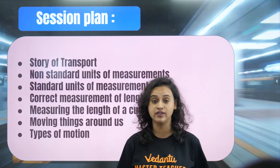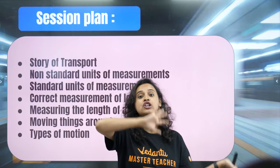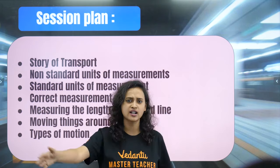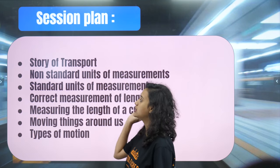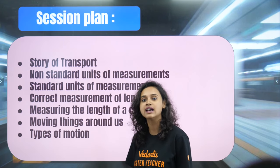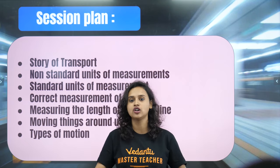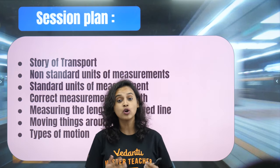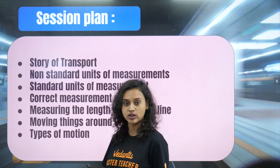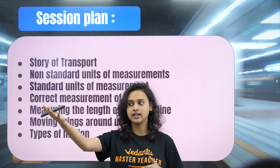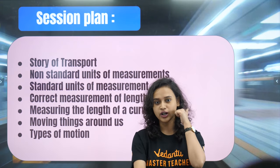In today's session we're going to talk about the story of transport — how the whole transportation system changed from walking to fast cars like Porsche, Ferrari, and aeroplanes. Then we'll talk about non-standard units of measurement, standard units of measurement, and correct measurement of length. After that, how to measure the length of a curved line, moving things around us, and types of motion.